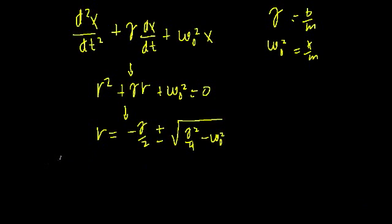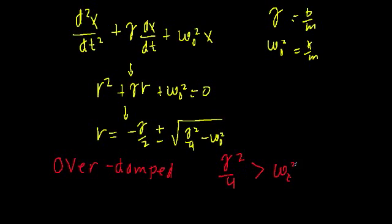In this case, we're going to call it the over-damped or the heavy-damped. As the name implies, that's the case where the damping force dominates and it's much greater than the restoring force. So as a result, gamma squared over four is going to be much greater than omega naught squared.